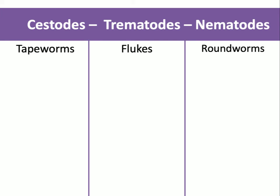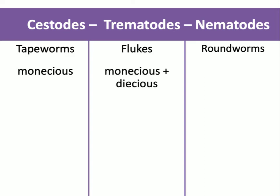If we compare them from a reproductive perspective, the cestodes were all monoecious — so hermaphrodites. There were two different groups in the trematodes: you had the monoecious organ-dwelling flatworms, and then the dioecious blood flukes — the schistosomes. In the nematodes, they are all dioecious. There are a couple of unusual ones, but for the most part you're going to see male and female versions of each worm.